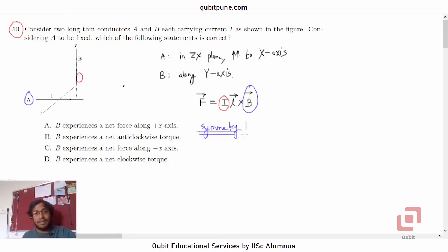So what exactly do we intend to do here? Let us imagine two very small portions of the conductor B on either side of the conductor A. So let us consider one portion of the conductor somewhere here.